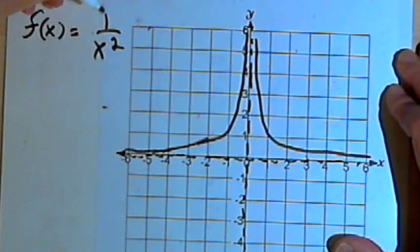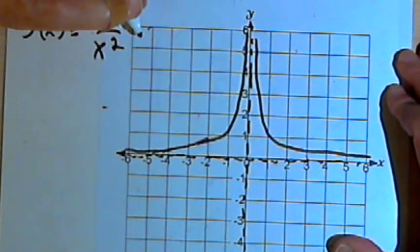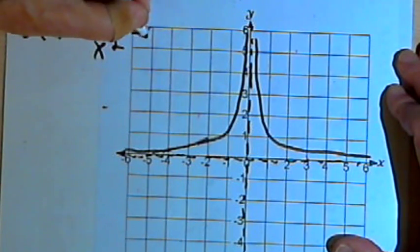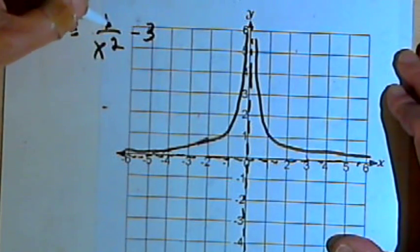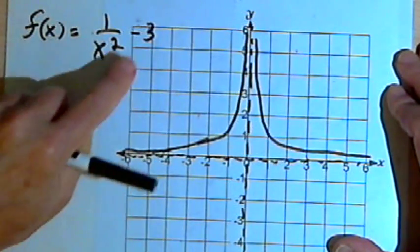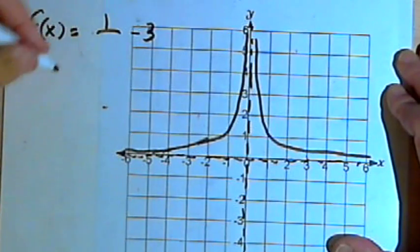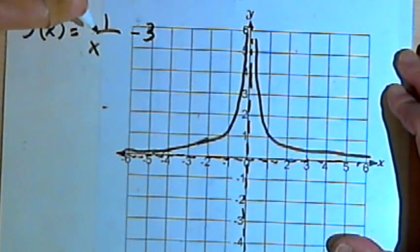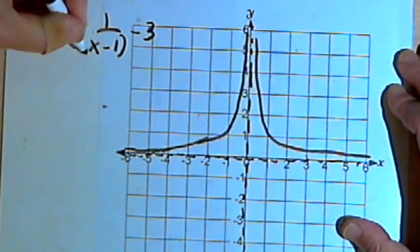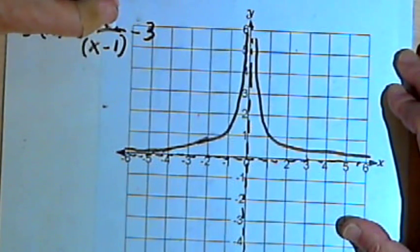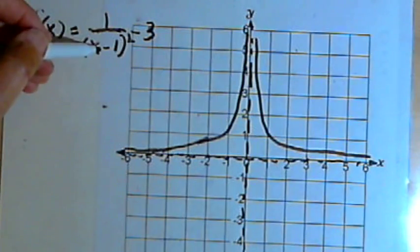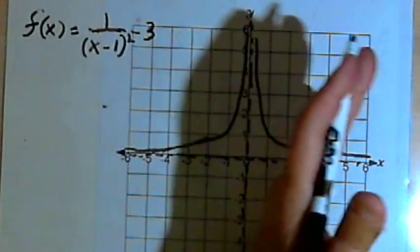And we can do the same transformations. If I want to shift this up or down, I'll add some constant to the whole fraction. So I can shift this down 3 units by making it 1 over x squared minus 3. That will just lower everything by 3 units. I can shift it to the right by adding a negative number — let's do negative 1 — so I'll have x minus 1, put that whole thing in parentheses, and then square it. That's going to shift the vertical asymptote and everything else 1 unit to the right.